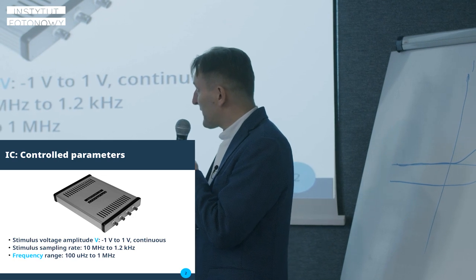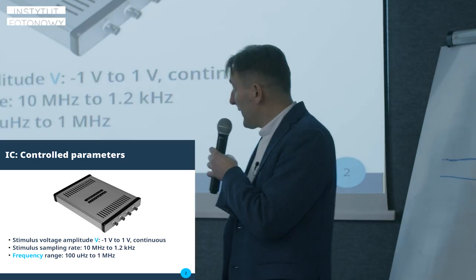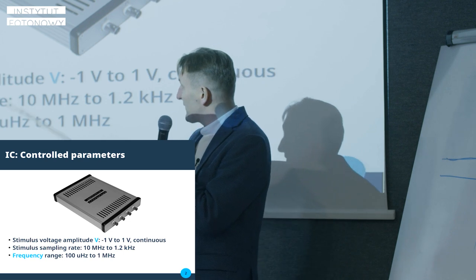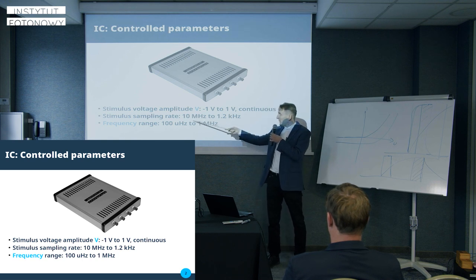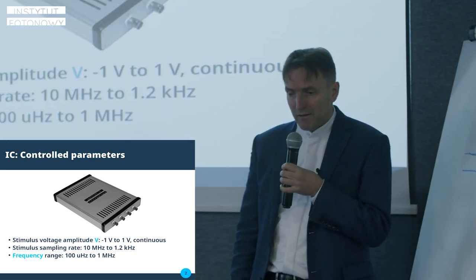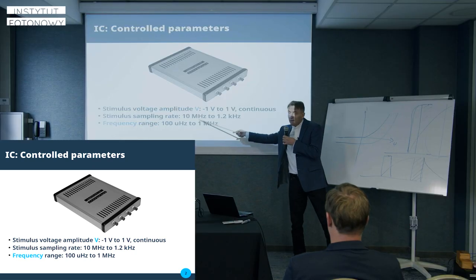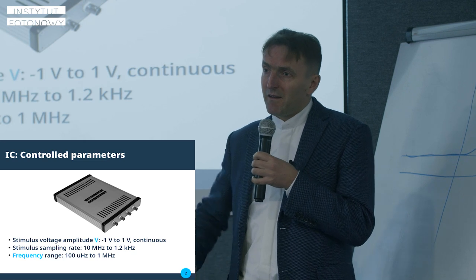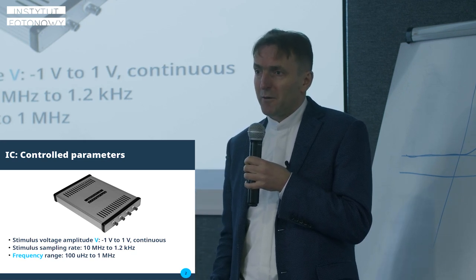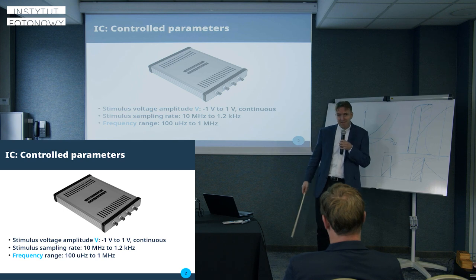The control parameters are the voltage that can be applied to the sample, from minus one to one volt, and it is continuous. There is a sampling rate that can also be adjusted from 10 megahertz to one kilohertz. If you go at full speed, at full rate, you will generate 40 megabytes of data per second, and it may clog not just your PC but your data-analyzing capabilities.